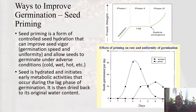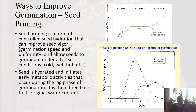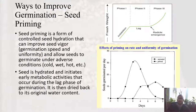Now let's look at ways to improve germination. Seed priming is a form of controlled seed hydration that can improve seed vigor — really germination speed and uniformity — and can also help seeds germinate under adverse conditions such as cold, wet, or hot conditions. What you're doing is hydrating your seeds, soaking them so they imbibe water, getting through the first phase of germination. The seed takes in water, kicking off metabolic processes that start happening during this second phase.